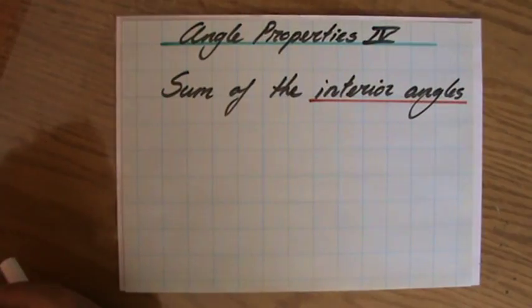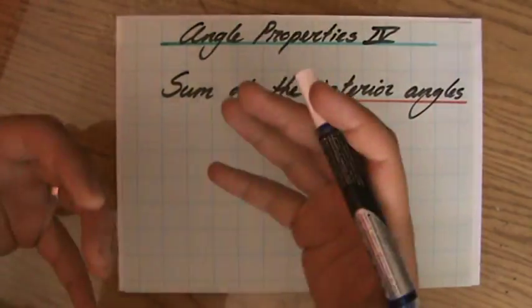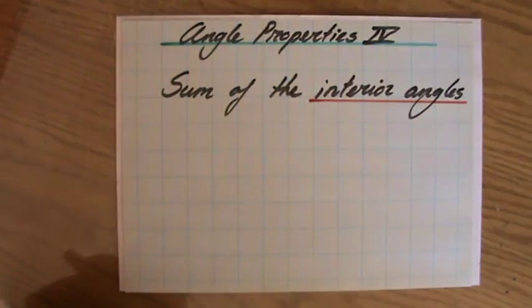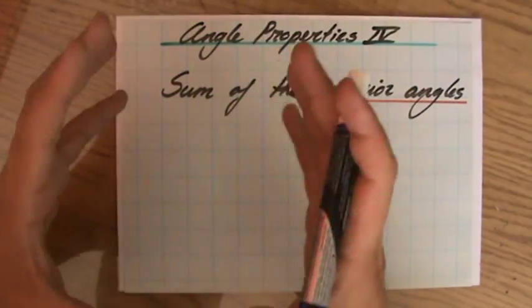So in my previous video, we have looked at the sum of the interior angles of triangles and quadrilaterals. And for this video, we are going to have a look at the sum of the interior angles for any polygon.